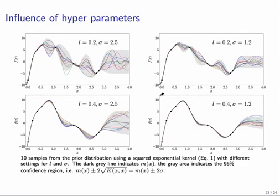Here you can see four different settings for both l and sigma. And each figure shows again 10 draws from the posterior distribution. This is what we have seen before.